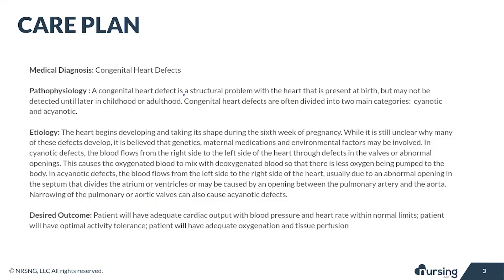A congenital heart defect is a structural problem that's present in the heart when the child is born, meaning it's developing in utero. The heart actually begins to develop during the sixth week of pregnancy, and we don't totally know what causes these defects to happen, but we do know that there are some risk factors that may be associated with it, so it's important to be aware of those.